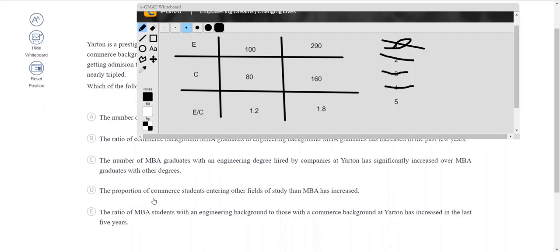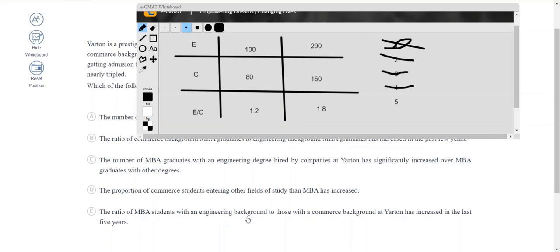So lastly, let's look at option E. The ratio of MBA students with an engineering background to those with a commerce background in Yarton has increased in the last five years. Definitely what we arrived at through our analysis: 1.8, 1.2. We can see the ratio of engineering to commerce has increased over the last five years. So voila, we have arrived at a correct answer and we have used the whiteboard.